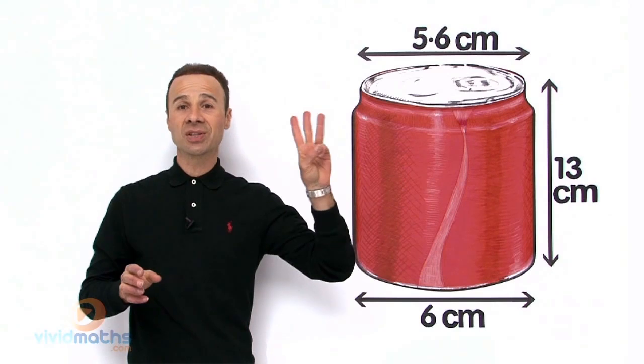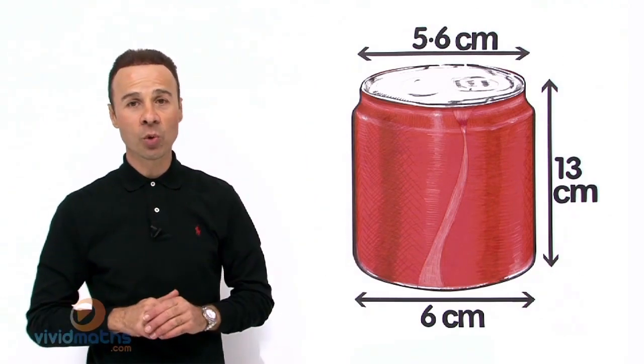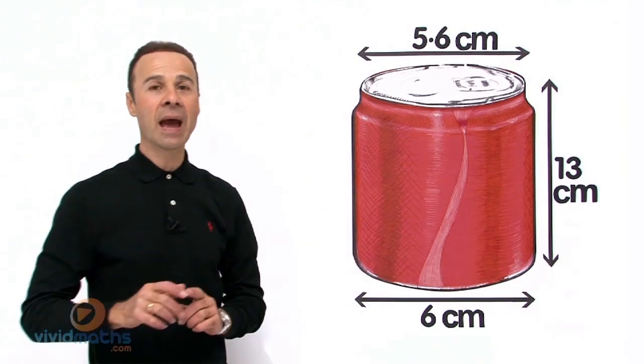Now we are going to take it into 3 steps. Step number 1, we are going to work out the radii, which is plural for radius, and we are going to work out the radius of the top because we are given the diameter.